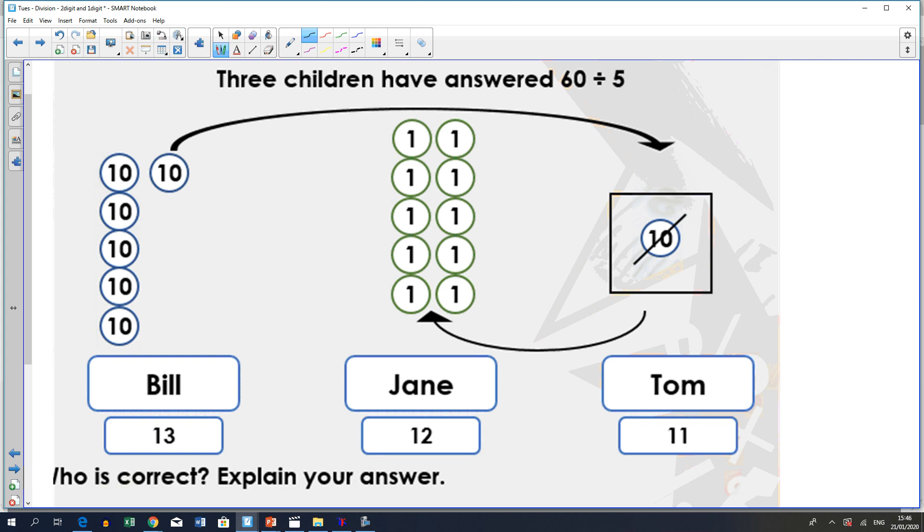So, for example, what they've done is they've got the 60. They've got 60 here. Now, they want to divide it into 5. So, they've got 5 here, down this far. So, 1, 2, 3, 4, 5. Now, they've got one left over that they can't share out.